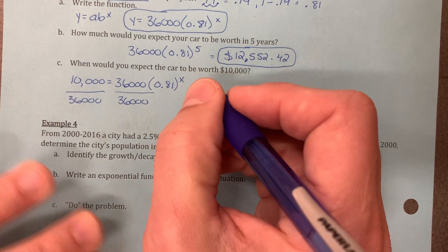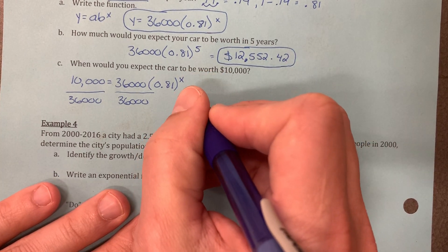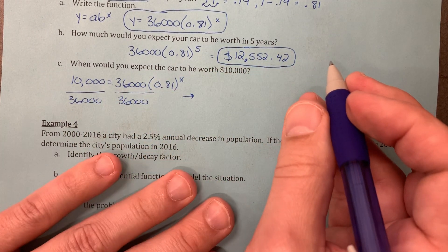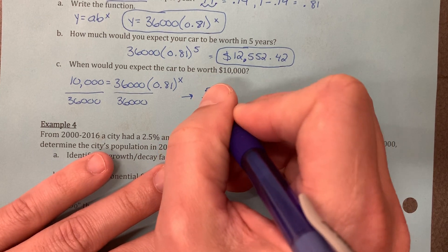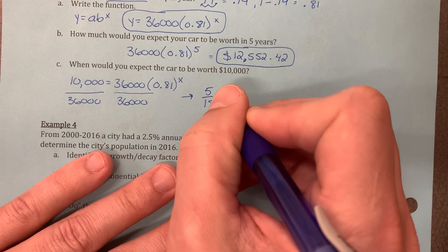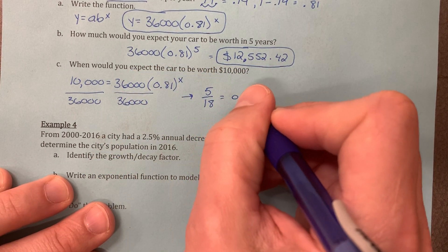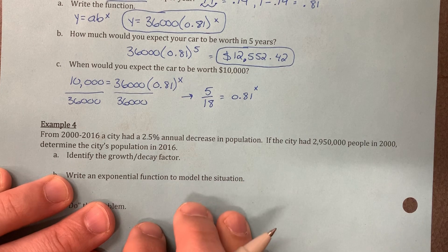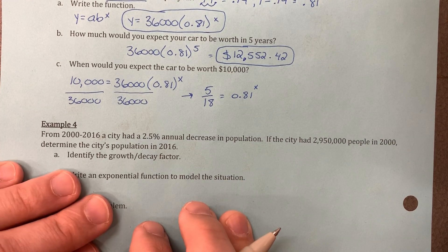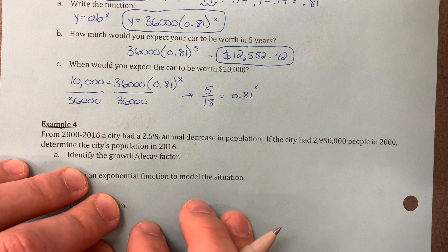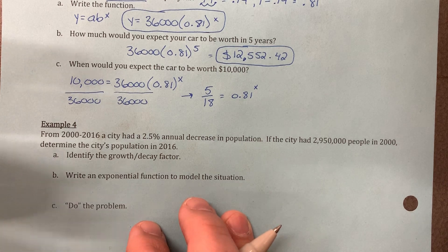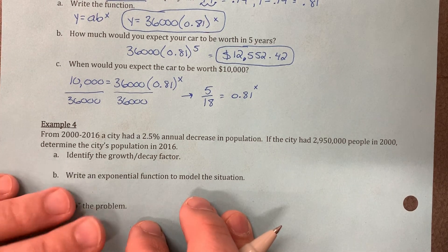So I'm going to say that 10,000 divided by 36,000 is 5 18ths. And then it will cancel over here on the right, the 36,000. So we have 0.81 to the x power. Now, that is not 0.81 times x. So we're not going to divide by 0.81. It's 0.81 to the x power. This is where the logs come in.